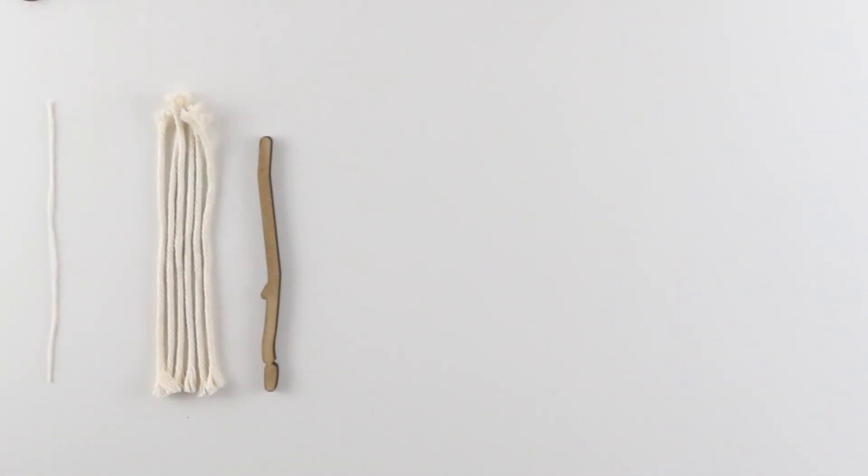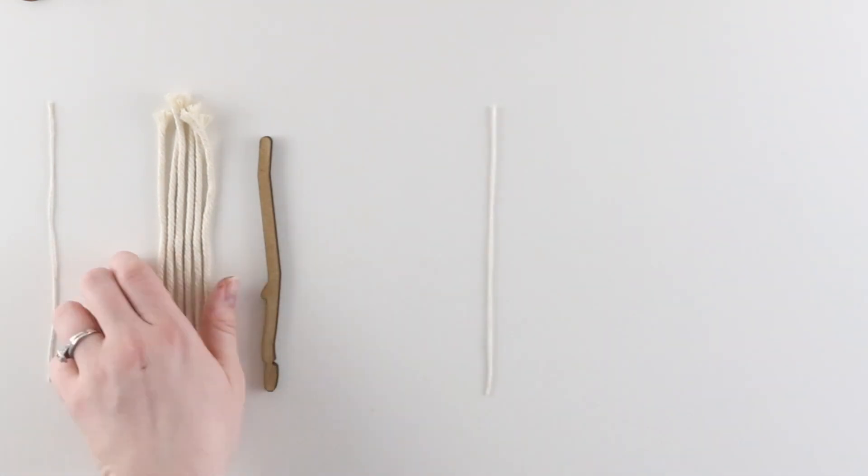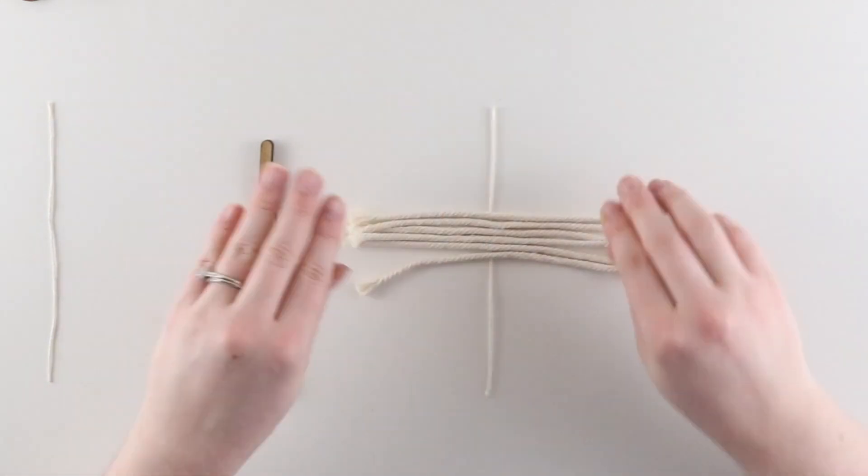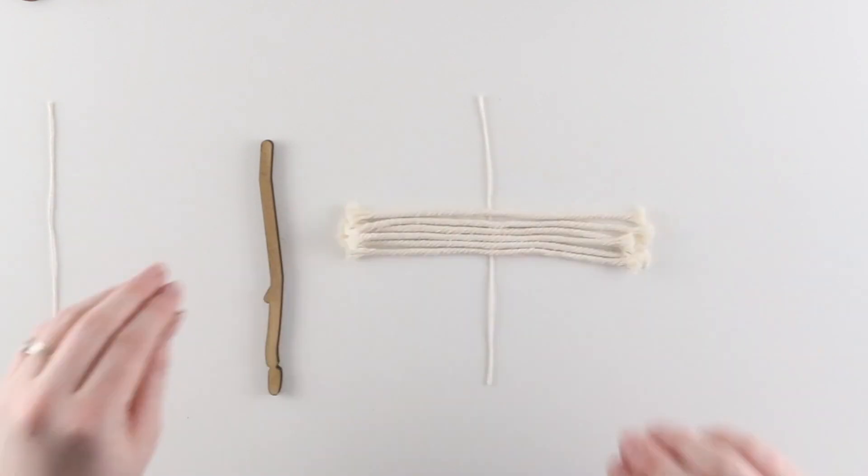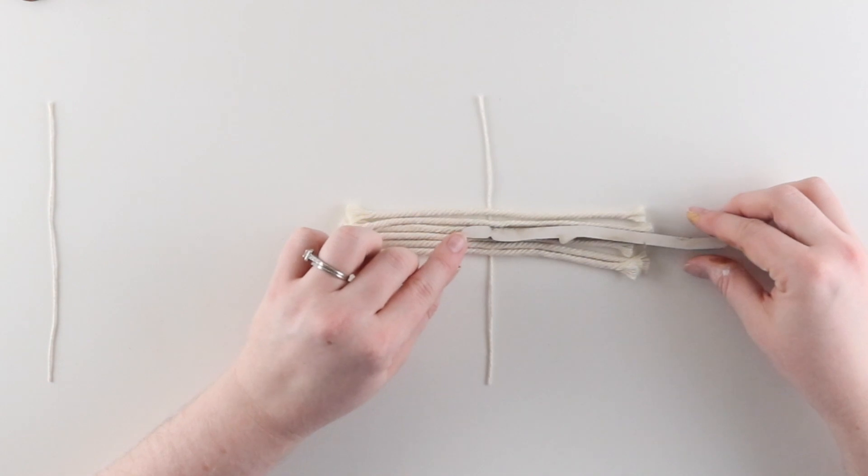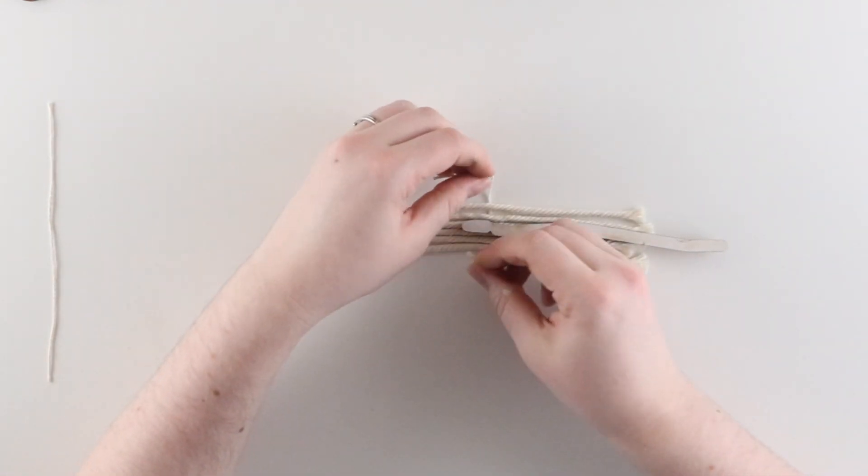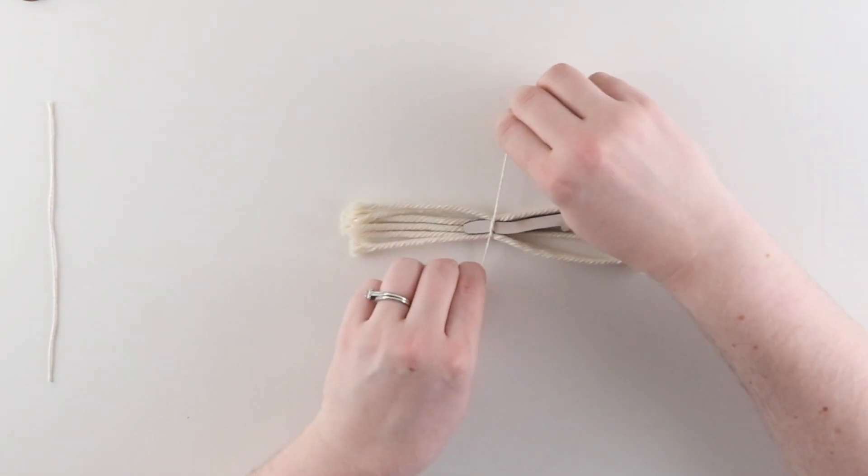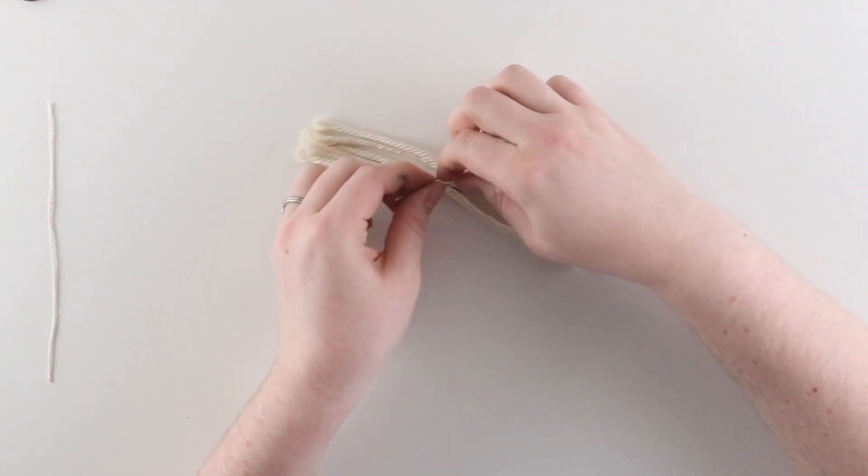To assemble the broom I'm going to start with one of the strings laying in front of me going vertically. And then I'm going to grab the six pieces of rope and lay them the other way across the center of the string. Then I'm going to place my broom handle on top of that going the same direction as the rope. And the notch in the broom handle should line up with the string. Then I'm going to tie a tight knot around the broom handle and the rope using that notch as a guide. Make sure to knot it twice so it's nice and tight.